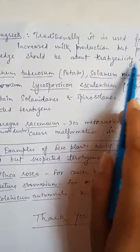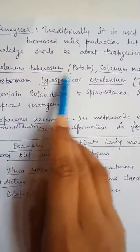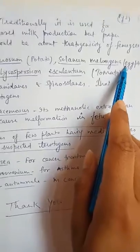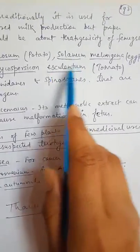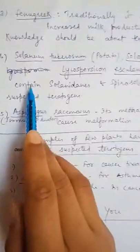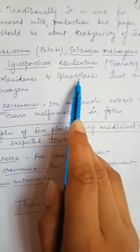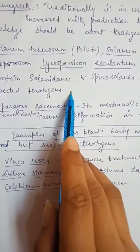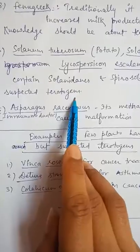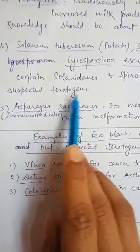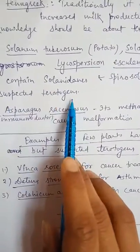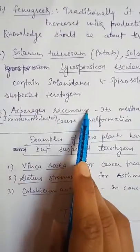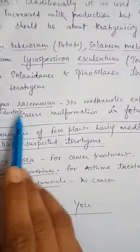The next examples are Solanum tuberosum (potato), Solanum melongena (eggplant or brinjal), and Lycopersicon esculentum (tomato). They contain solanidines and spirosolan alkaloids that are suspected teratogens. This means their activity as teratogens is not fully confirmed, but they are suspected to have teratogenicity.